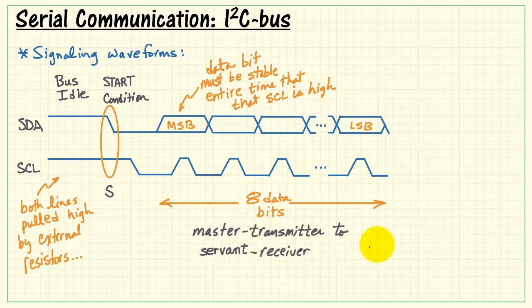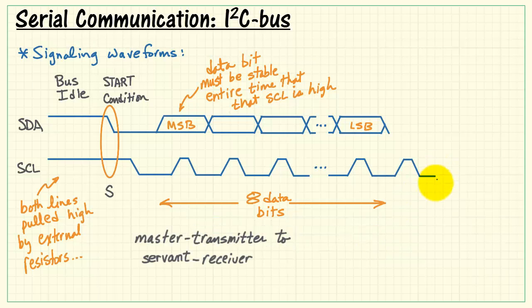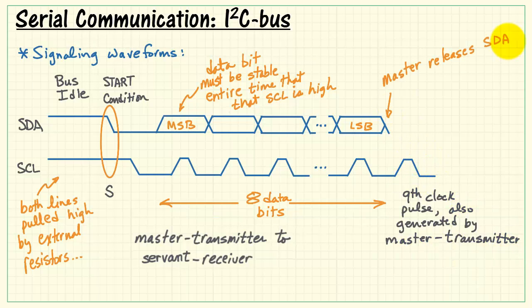During this portion of the transfer, the master is the transmitter and the servant is the receiver. Now after the eighth data bit, the master generates a ninth clock pulse. Then the master releases control of the SDA line and allows the servant to pull this line low to acknowledge.